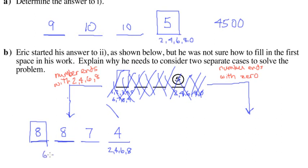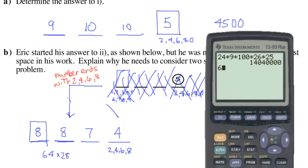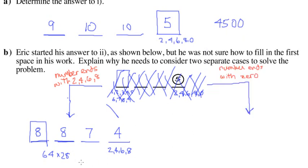Eight times eight is 64. Seven times four is 28. Sixty-four times 28, I have no idea. Sixty-four times 28, 1792. So there's 1,792 numbers which are four digits and end in two, four, six, or eight.